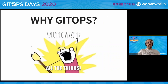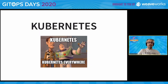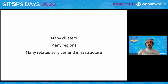So why GitOps? I'm a big fan of automation, and GitOps is a way to automate as much as possible. It's a great way to avoid manual steps and try to do less manual work that is prone to errors. At Adobe, we use Kubernetes for a lot of things on the cloud. We run at a decent scale — we have many clusters, many regions, and also related services and infrastructure that goes with it.